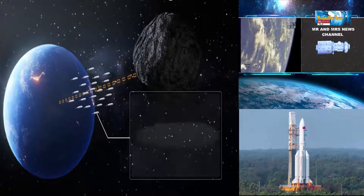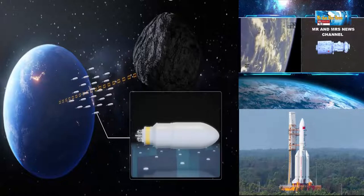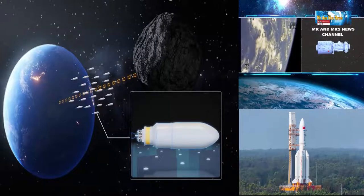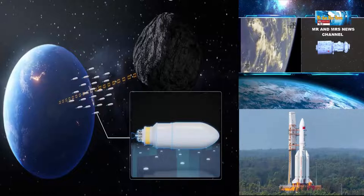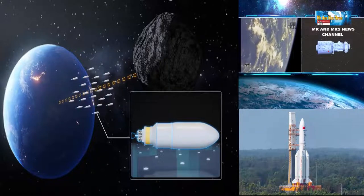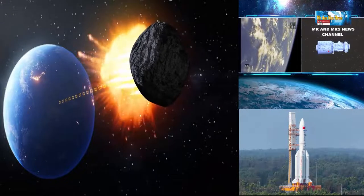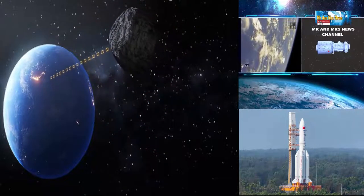Dalam simulasi yang dilakukan di pusat sains luar angkasa nasional China, para peneliti menemukan 23 roket Long March 5 yang menghantar secara bersamaan dapat membelokan asteroid besar dari jalur astrinya dengan jarak 1,4 kali radius bumi.